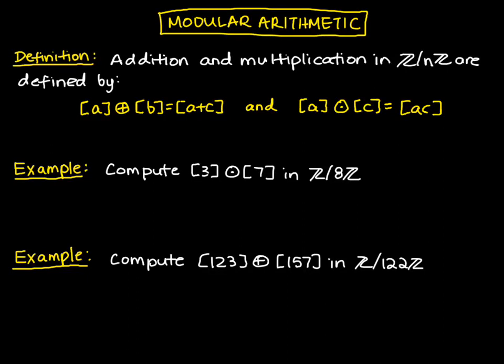When we're doing operations with congruence classes, we define addition and multiplication as follows. When we do addition, we take the sum of the congruence classes to be the congruence class of their sum, and similarly for multiplication.